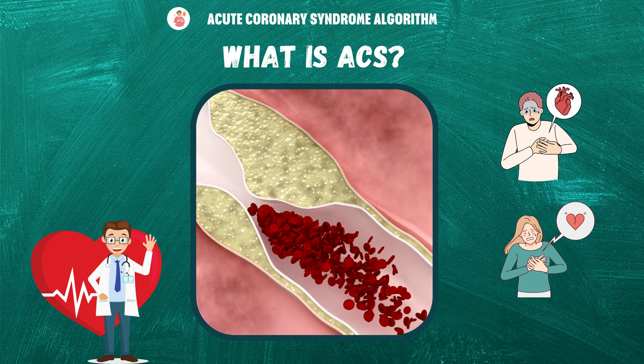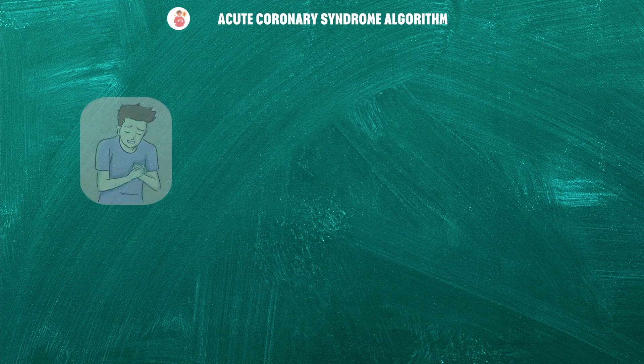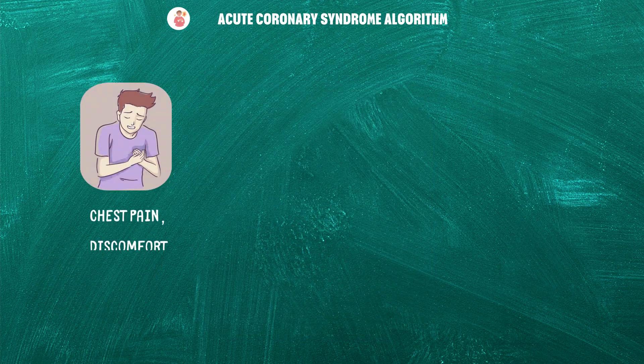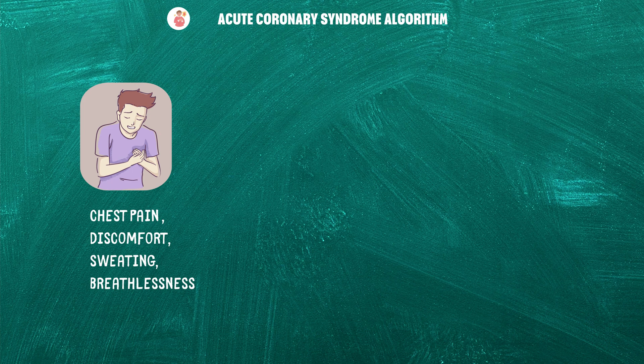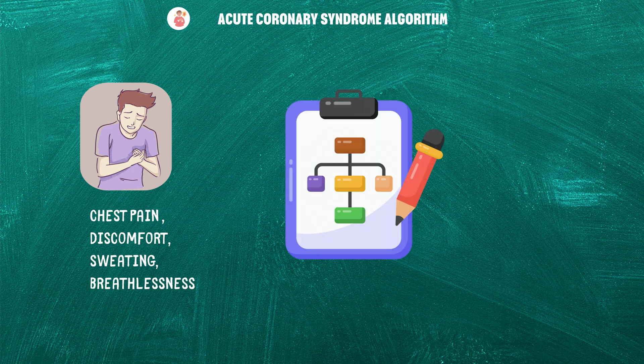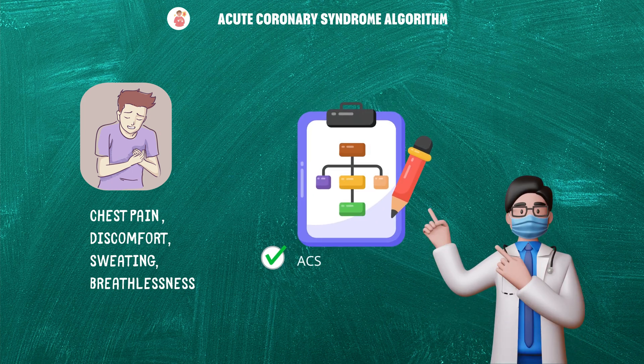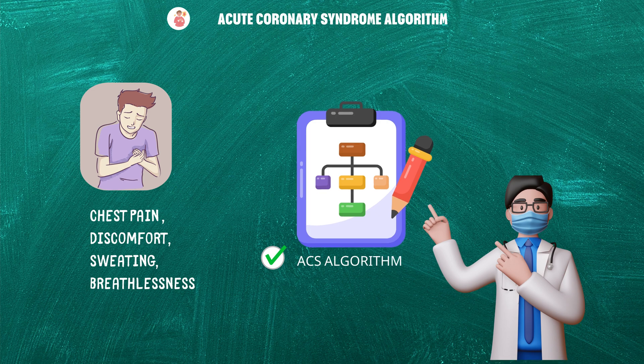Let's have a brief look at the algorithm. If you get a call from the emergency department regarding a patient having complaints of chest pain or discomfort, with or without sweating and breathlessness, you have to immediately activate the ACS algorithm.